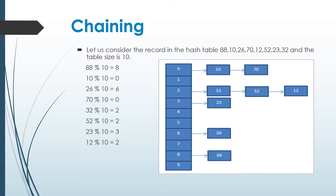23 mod 10 equal to 3, so 23 is placed in the hash table at key value 3. 12 mod 10 equal to 2. Here 12 should be placed at key value 2, but already 32 and 52 are placed in the hash table, so 12 is attached to 52 by using a chain. This is about chaining.